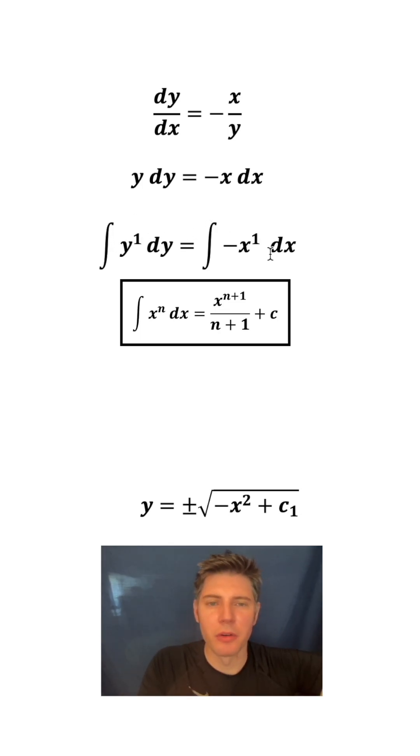Each of these are to the power of 1, so 1 plus 1 is 2, so we're going to do it to the second power and divide by 2. Same thing for this one. You also do plus c. Then from here, if you multiply both sides by 2, the 2's cancel on the left side, which gives us y².